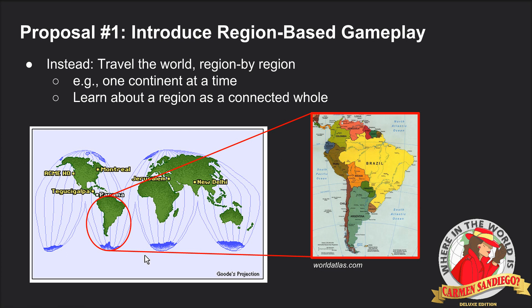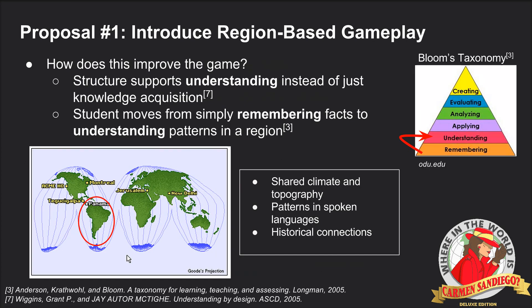I think this would improve the game because this new structure would support understanding instead of just knowledge acquisition. The student wouldn't simply have to remember facts, but would also start understanding patterns in a region. For example, they might see that a mountain range goes through certain cities, or there's a historical connection, or maybe languages are shared across different countries.